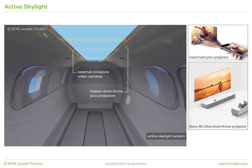Active skylight. The active windows are complemented by the recessed active skylight. A network of hidden short-throw PICO projectors are wired to roof-mounted video cameras, displaying real-time views from above the aircraft onto the cabin ceiling.